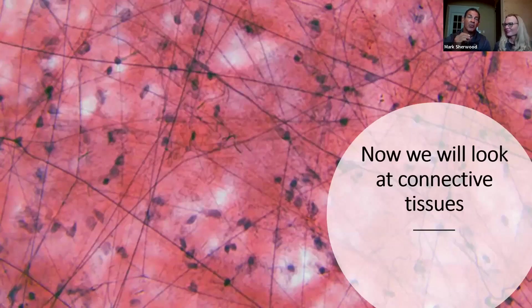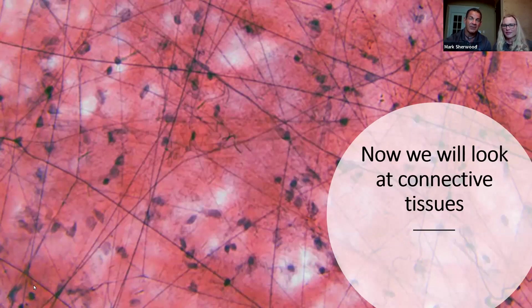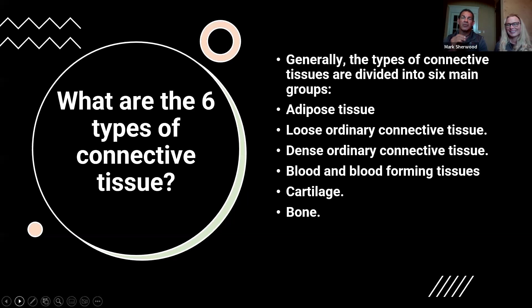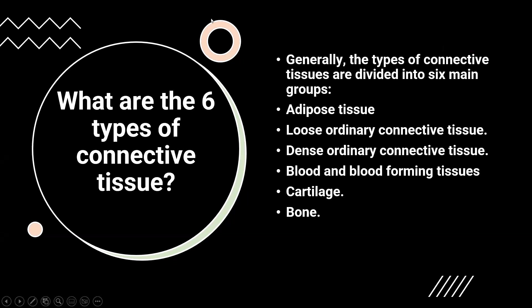People are going to get a lot out of this because this is important to catch. A lot of times we look at connective tissue and don't really register it as being inclusive of some of these things. Those little black blobs in the slide are actually cells within the connective tissue — nothing more than trillions of cells put together. There are really six major types of tissues we're going to discuss.